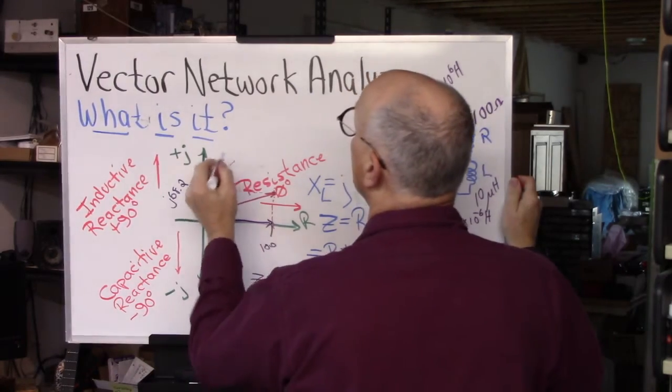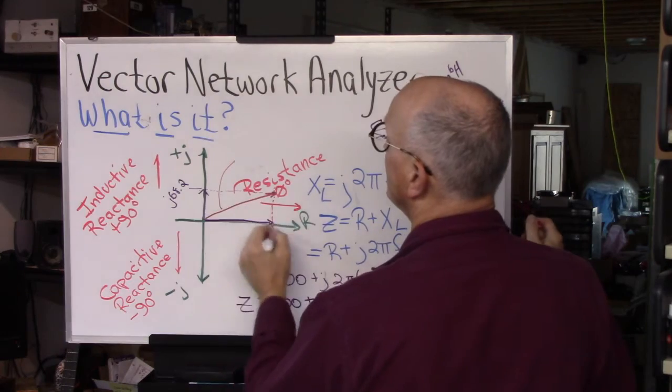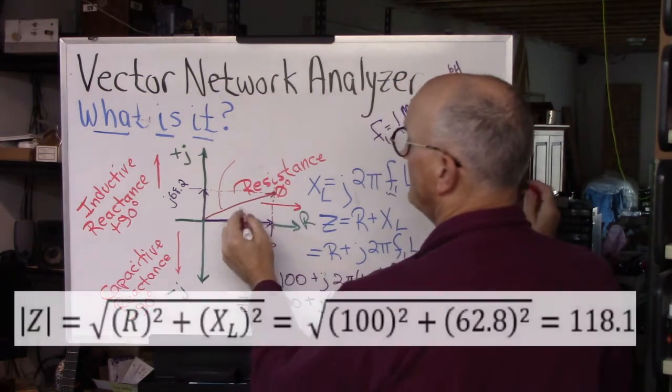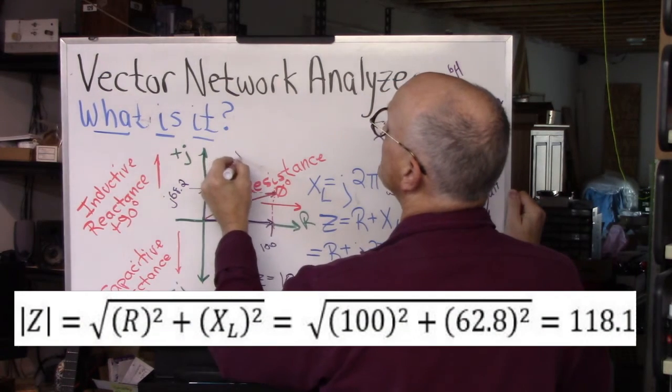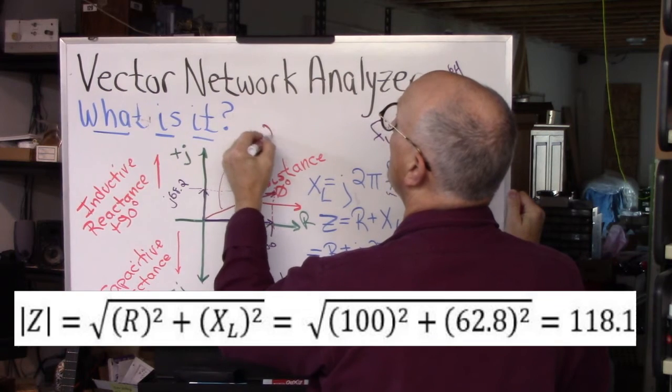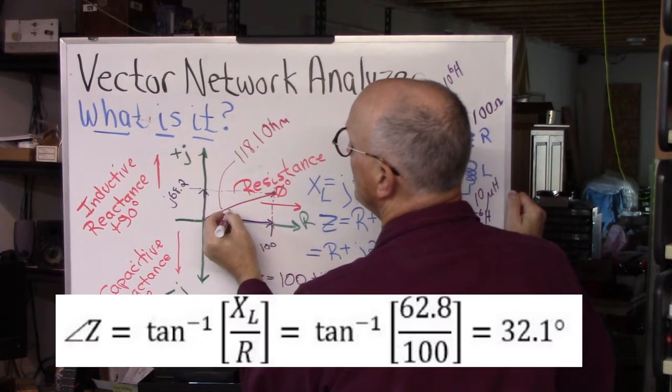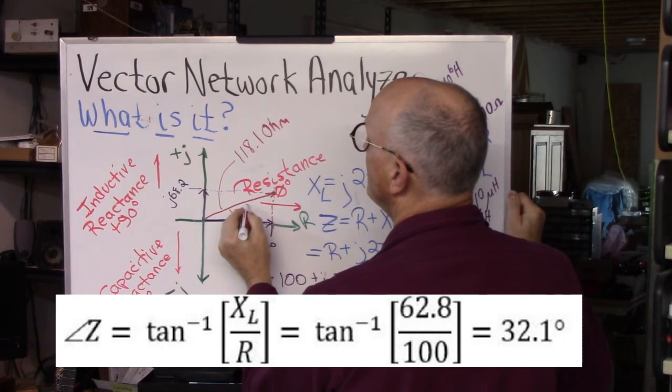And it turns out that the length of that line, notice this is a right triangle. And so you can use simple trigonometry to determine the length of this hypotenuse of the triangle. And it's 118.1 ohms is the magnitude. And then using simple trigonometry, we know that this is about 32 degrees.